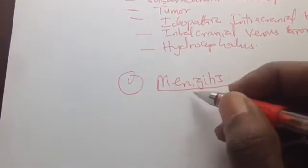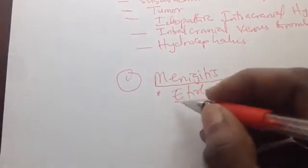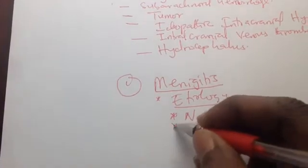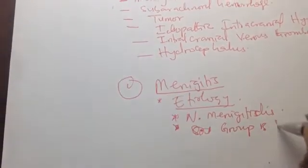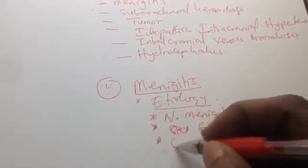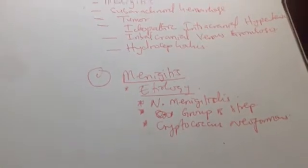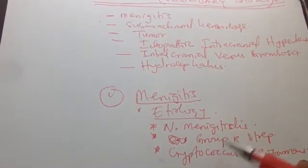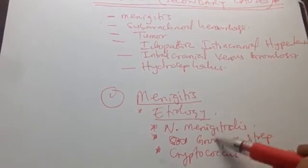Meningitis is inflammation or infection of the meninges. The most common cause — the etiology — is infection. That infection can be due to bacteria called Neisseria meningitidis. In neonates, we have Streptococcus agalactiae, also known as Group B Streptococcus. We also have Cryptococcus neoformans, which can also lead to meningitis. There are many infectious agents that can lead to meningitis.